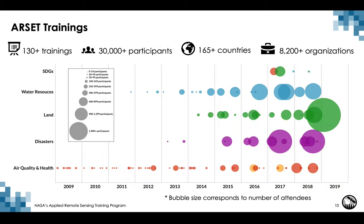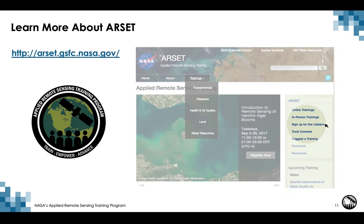This infographic gives the timeline for ARSET for its first 10 years from 2009 to 2019. Each bubble size corresponds to the number of attendees per training and application area. For ARSET's first 10 years, the program held more than 130 trainings with over 30,000 participants joining both in-person and online from across the planet, with a marked increase in participants over the past five years. To learn more about ARSET, please visit their website where you have access to all previous trainings and materials.